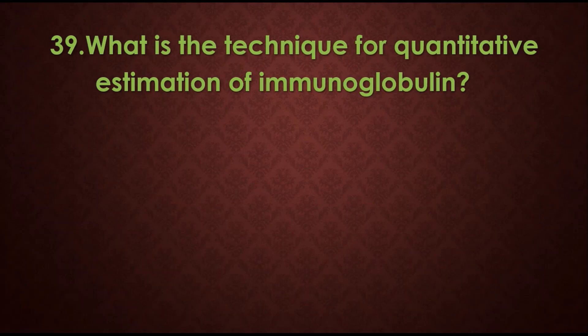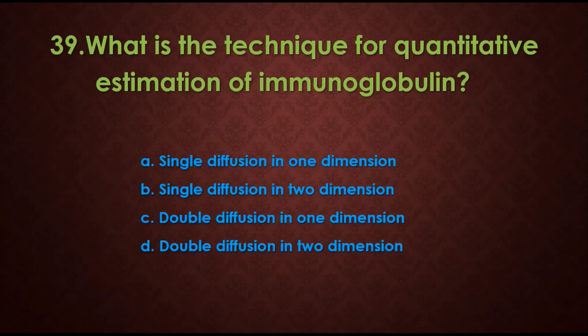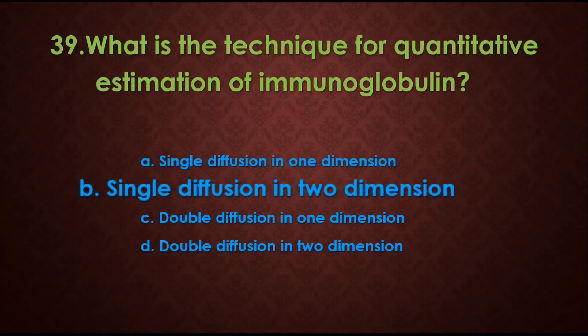Question 39: What is the technique for quantitative estimation of immunoglobulin? Options are: A) single diffusion in one dimension, B) single diffusion in two dimensions, C) double diffusion in one dimension, D) double diffusion in two dimensions. The answer is B) single diffusion in two dimensions. This falls under the types of antigen-antibody precipitation reactions.